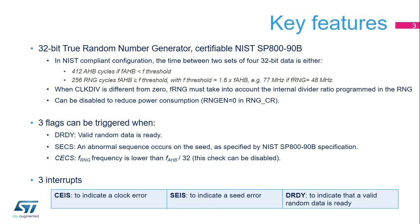the time between two sets of four 32-bit data is either 412 AHB cycles if FAHB is less than F threshold, or 256 RNG cycles if FAHB is greater than or equal to F threshold, with F threshold equals 1.6 times FAHB. For example, 77 MHz if FRNG equals 48 MHz.